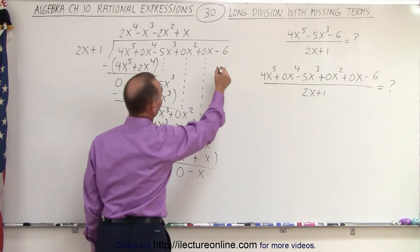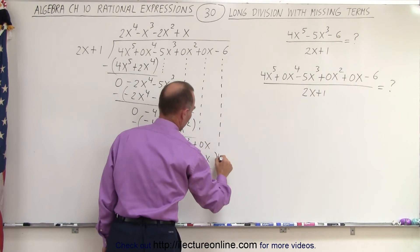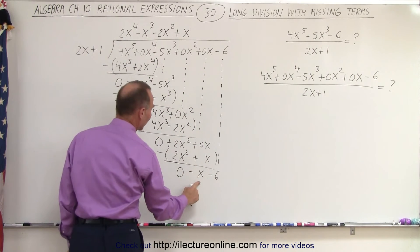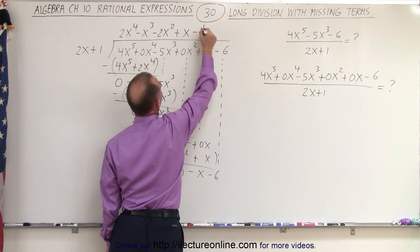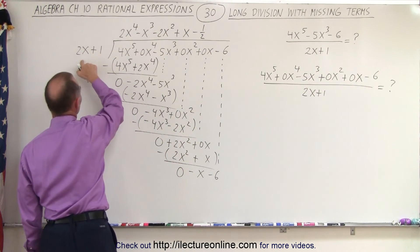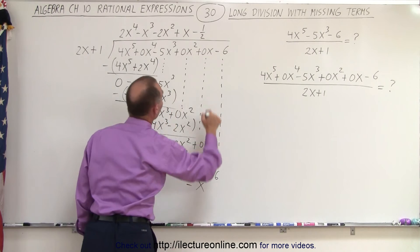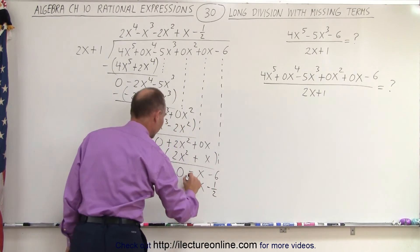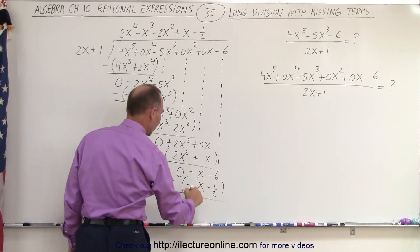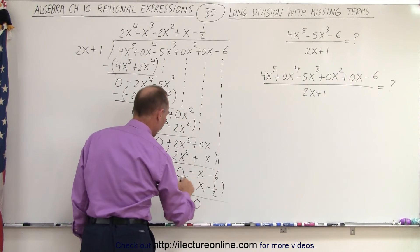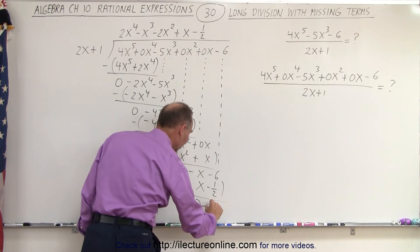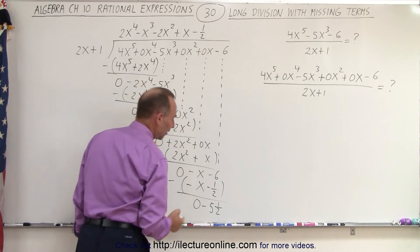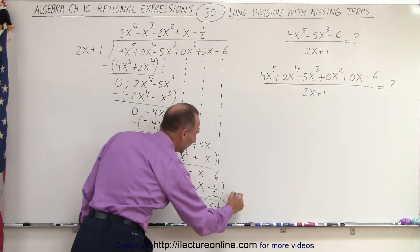Now we're almost done. We drop down the last term: minus 6. What times 2x gives us minus x? It looks like minus 1 half. Minus 1 half times 2x gives us minus x, and minus 1 half times 1 gives us minus 1 half. Again we subtract that from above: this minus this gives us 0, and minus times a minus becomes plus — that gives us minus 5 and a half, or minus 5.5. So this here is the remainder.